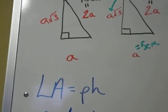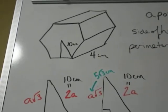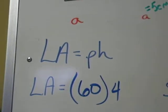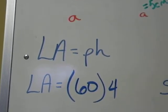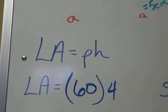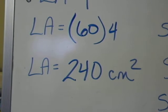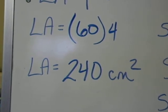And the height of the overall prism is 4 centimeters. So the math problem I need to do is 60 multiplied by 4. 6 times 4 is 24, stick a 0 on the end, 240 centimeters squared. And I'm done with lateral area.